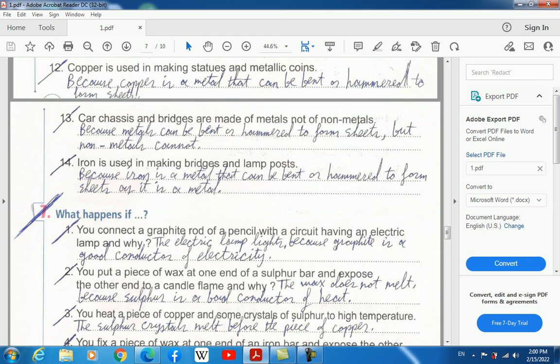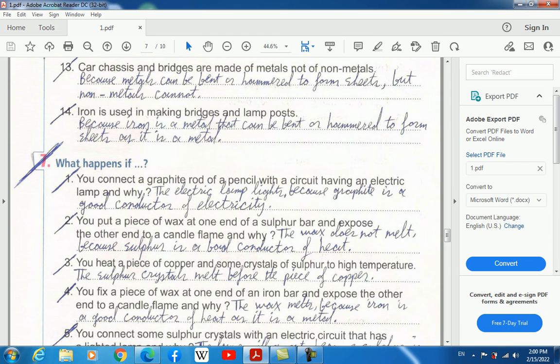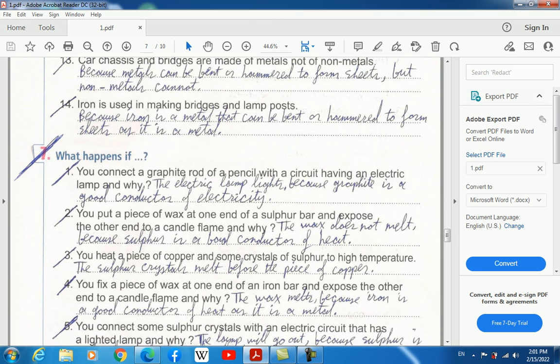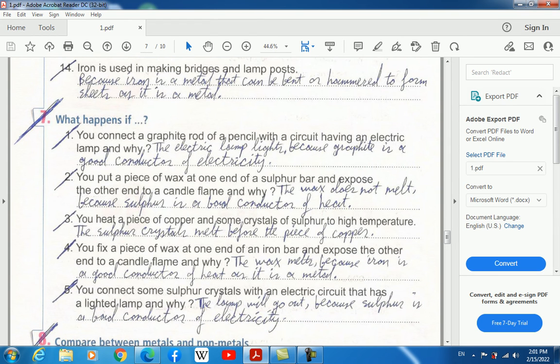Twelve, copper is used in making statues and metallic coins because copper is a metal that can be bent or hammered to form sheets. Thirteen, cars, bridges, and lamp posts are made of metals not of non-metals because metals can be bent or hammered to form sheets but non-metals cannot. Iron is used in making bridges and lamp posts because iron is a metal that can be bent or hammered to form sheets.